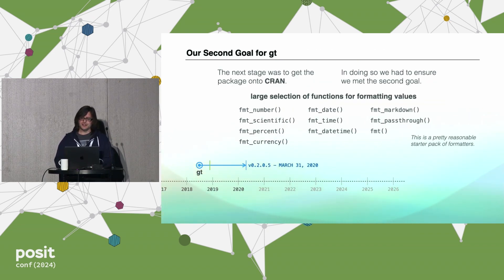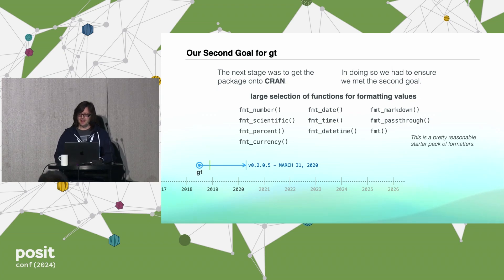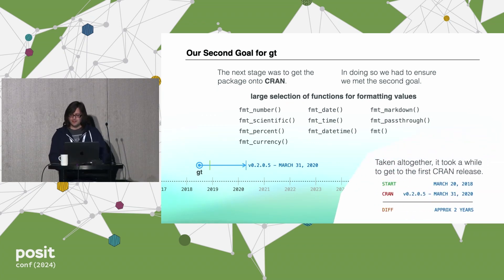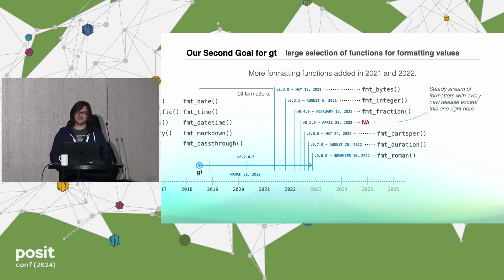Our second goal was a large selection of functions for formatting values. We started with these formatters — they all begin with fmt_ and are just for formatting values in the table body. They're super important and very fundamental. This was a reasonable starter pack of formatters for the CRAN release, which was in March 2020. It took two years from the start of the package to get it to CRAN. We just wanted to really get things right.